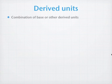Now, from base units, we get derived units. Derived units are a combination of two or more base units or other derived units as well.